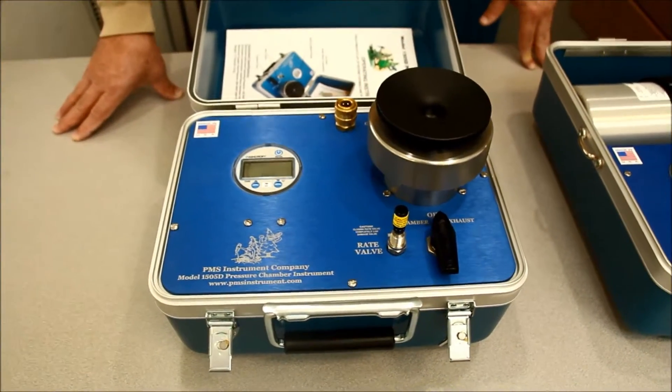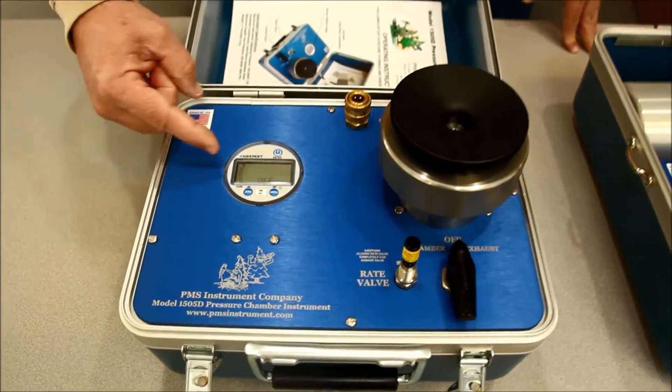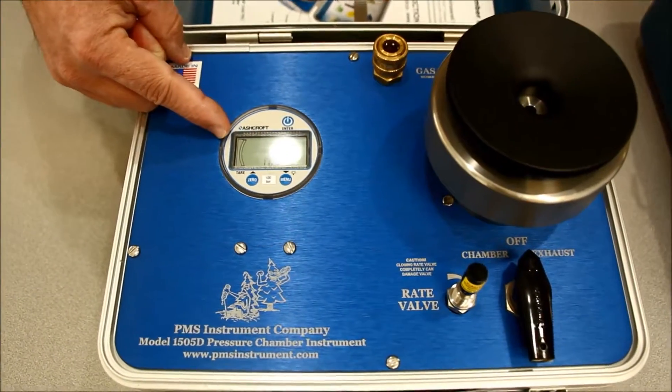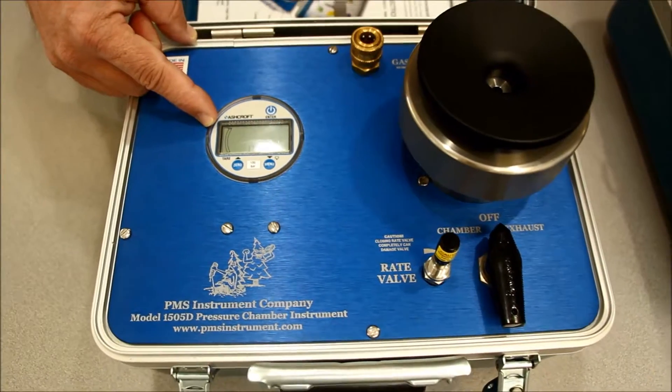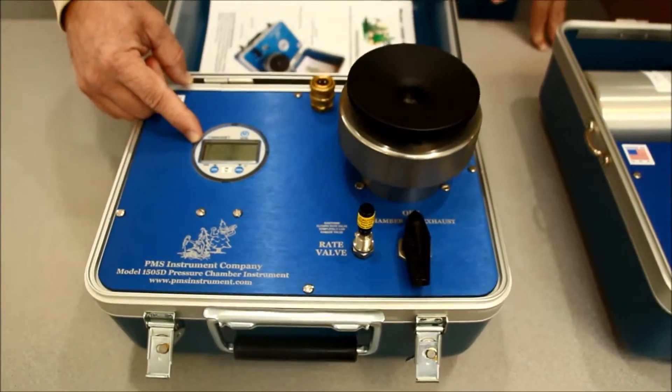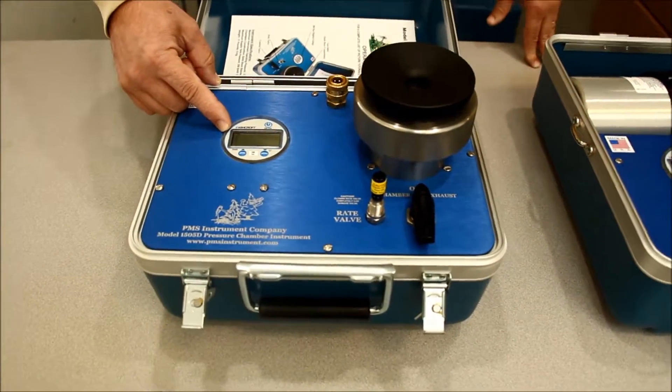Today we're going to demonstrate replacing the batteries for the digital gauge on the model 1505D, 605D, 1515D, or 615D.